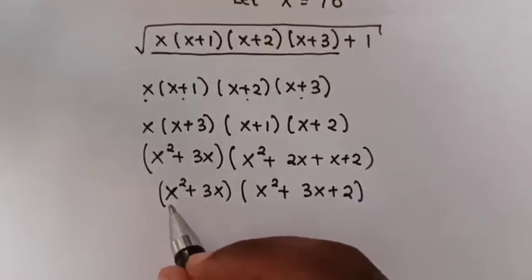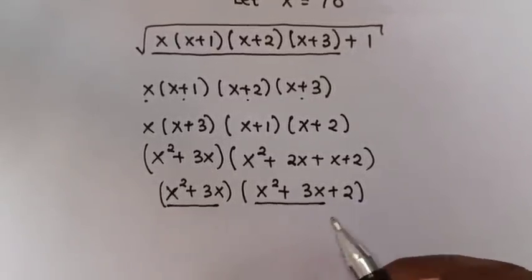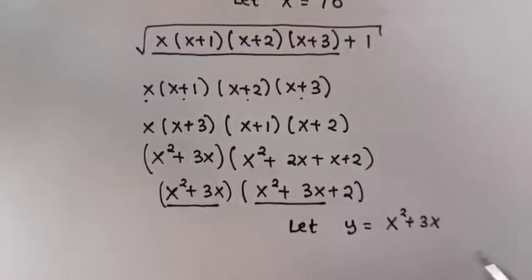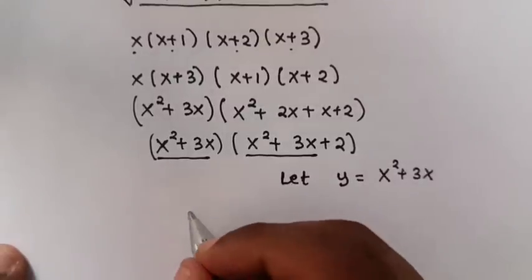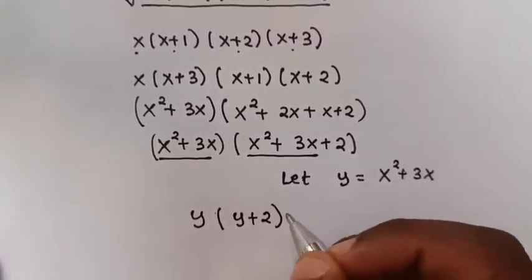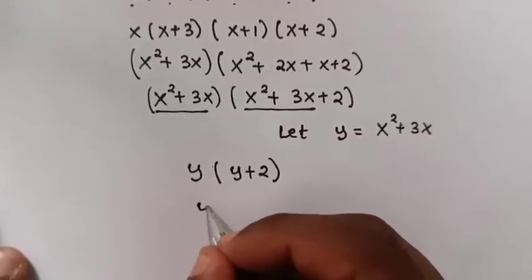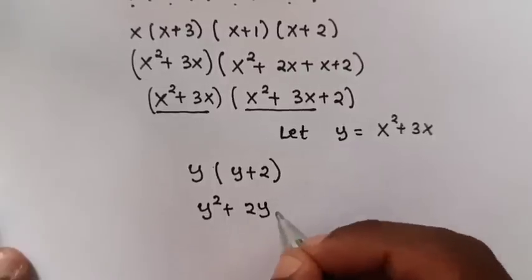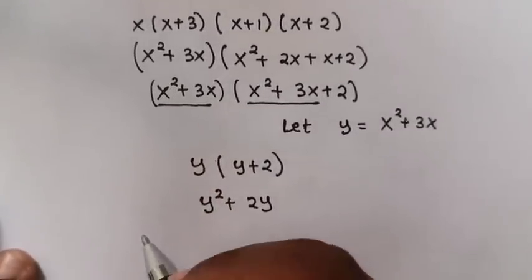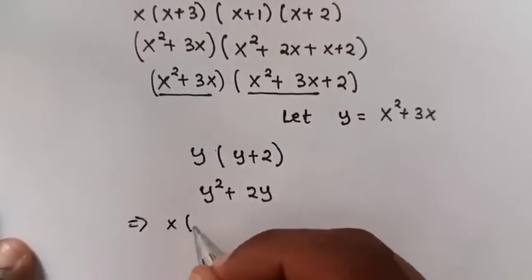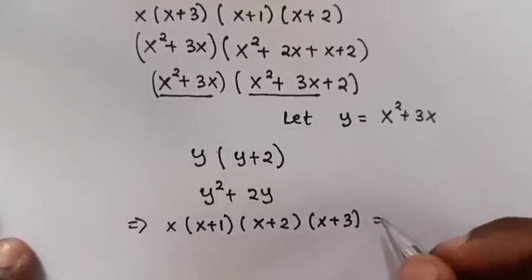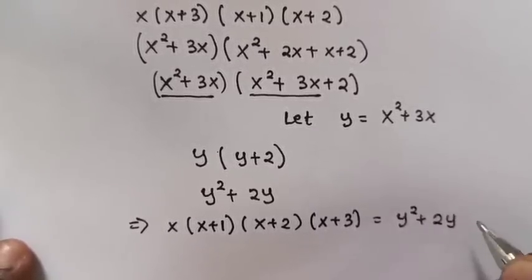So from here we can see x squared plus 3x is common, so we let y equal to x squared plus 3x. Here, this will be y times y plus 2. When we multiply, it will be y squared plus 2y. So x times x plus 1 times x plus 2 times x plus 3 equals y squared plus 2y.